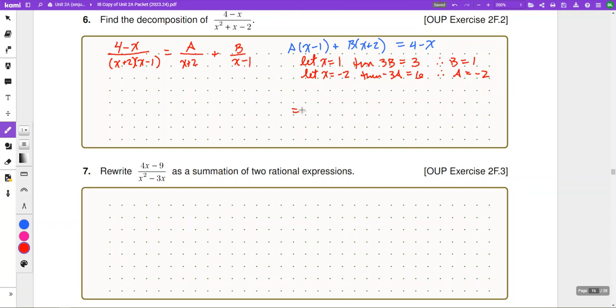And so, our decomposition is going to be 1 over x minus 1 minus 2 over x plus 2. And, of course, you can always check your decomposition to see if you do get the same result. That is our idea there.